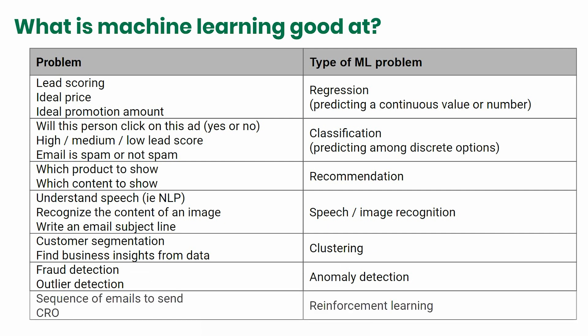And finally, if you're trying to send a sequence of emails or do conversion rate optimization on a website, reinforcement learning is probably the approach that's going to be best suited to solve this.